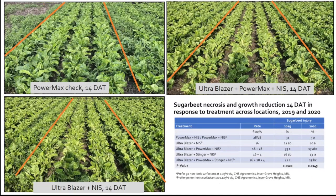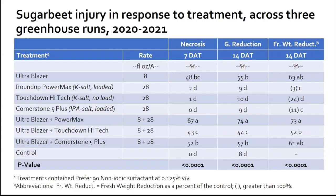These images show increased control as well as increased sugar beet injury. The glyphosate check on top shows great-looking sugar beet but quite a few weeds remaining. UltraBlazer plus PowerMax shows lots of injury but is the cleanest of the three photos. That led us to ask why there is more injury when we add glyphosate. In 2020 and 2021 we ran a greenhouse experiment to determine if the increased injury resulted from the salt — K versus IPA salt — or from the adjuvant as a component of the formulation. We learned that neither Touchdown High Tech nor CornerStorm 5 Plus caused as much injury, necrosis, or growth reduction as PowerMax.